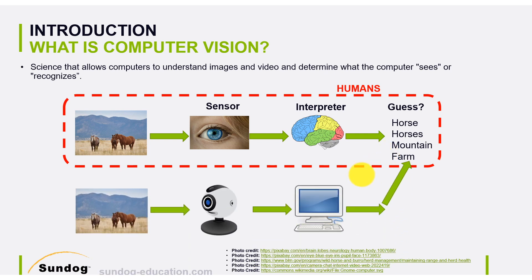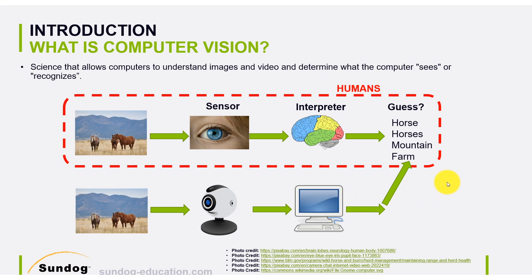How can we do that in a computerized form? It's actually the same idea. If we use the exact same image, we use a camera to take a still photo or a video stream of photos, and within the computer we develop algorithms to classify the images — again, horses, mountains, farms, and so on. That's pretty much what we're going to do throughout the entire section.